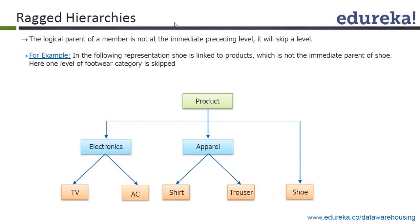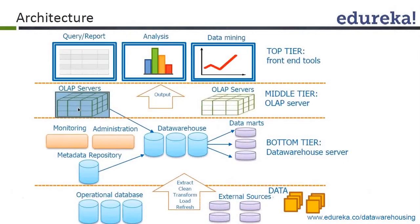Those are the examples of the types of hierarchies. Now we move on to the data warehouse architecture. The colorful diagram shown here illustrates the flow of data from the bottom-most level, which is our OLTP systems. There are three tiers: the bottom tier, the middle tier, and the top tier. Data flows from the OLTP systems, is cleaned and then loaded into the data warehouse.